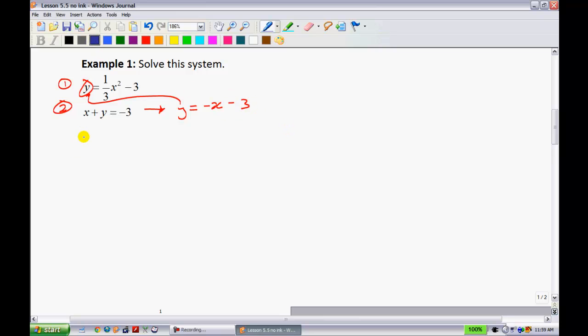I'll make a note that I'm going to sub equation 2 into equation 1 right here. So this becomes negative x minus 3. I'll put brackets just because I've noted that I've substituted in for that y, is equal to 1/3 x squared minus 3.